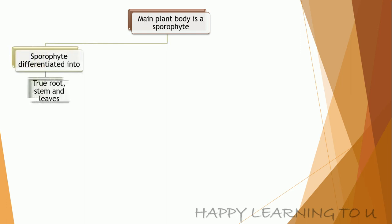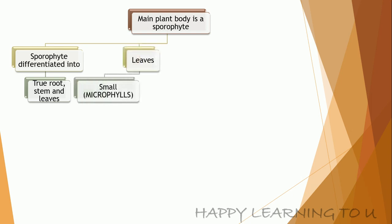The sporophyte is differentiated into true root, stem, and leaves. The leaves here may be small, wherein they are known as microphylls. An example is Selaginella.